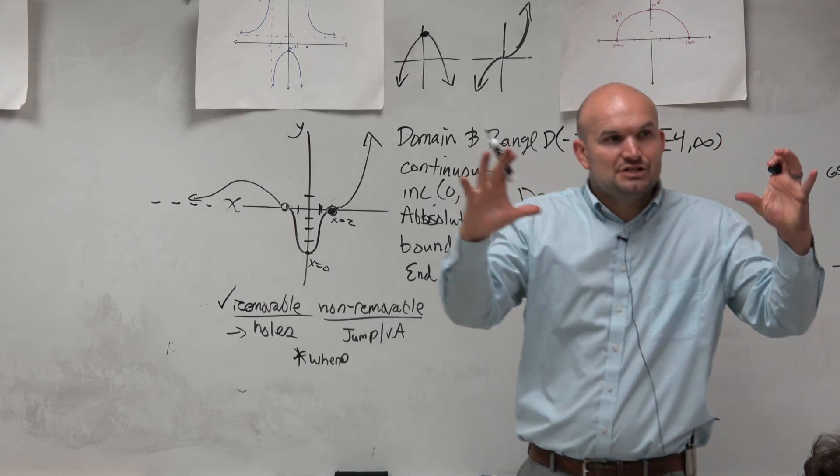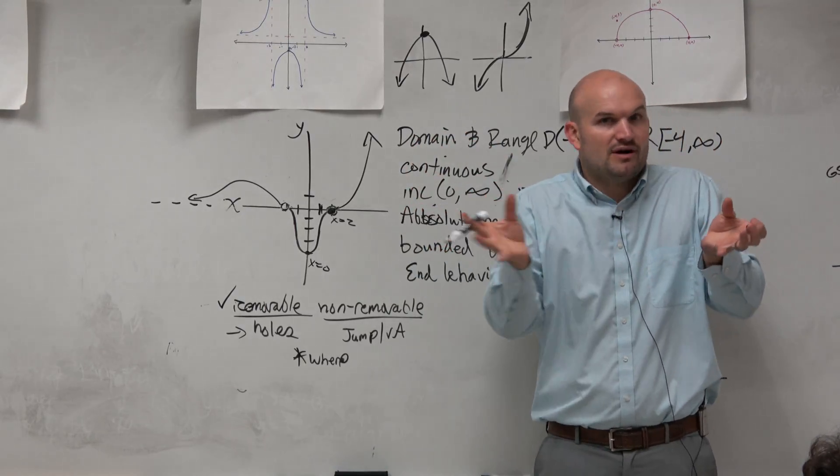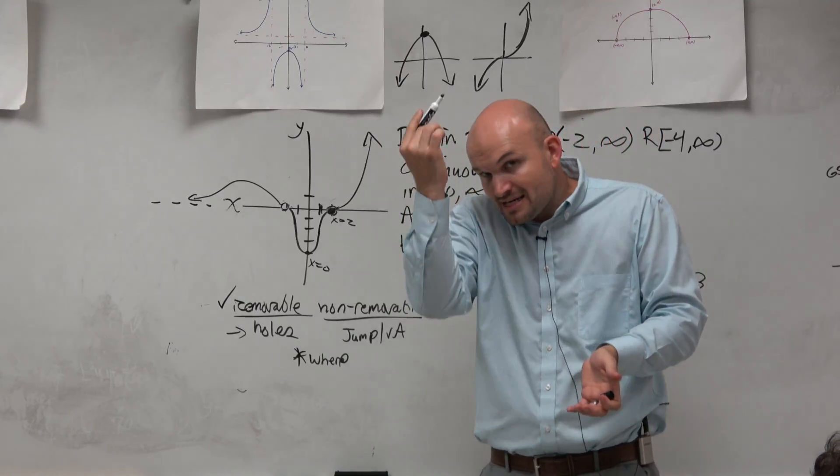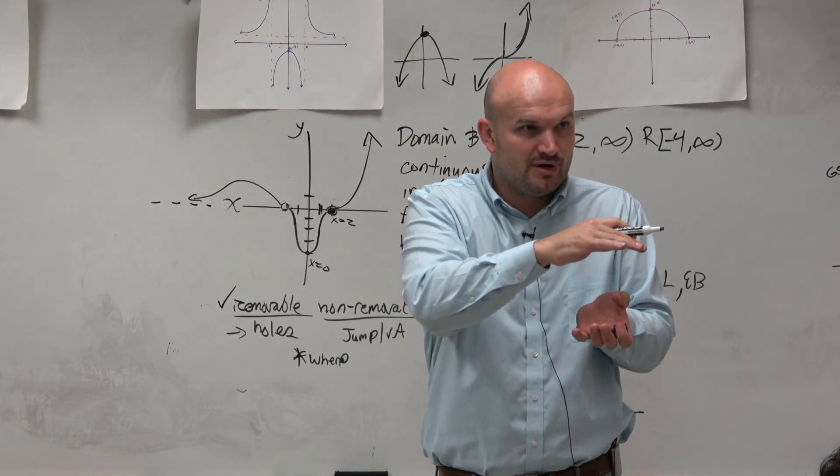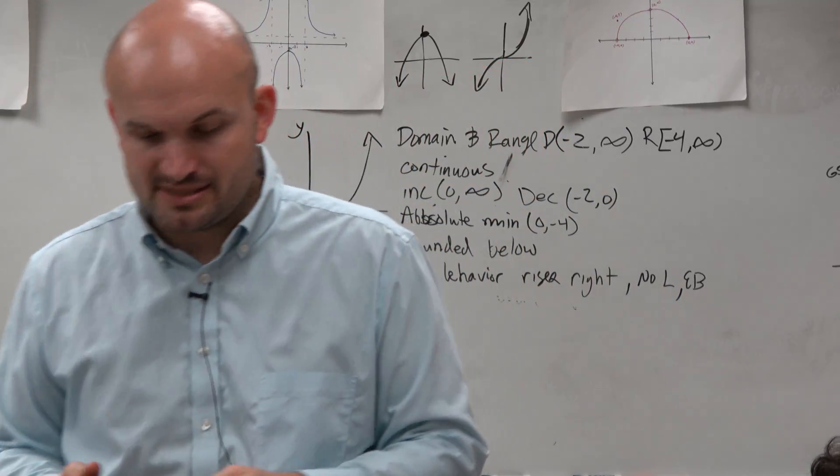So the end behavior is like as you zoom out, as you look to left and right, what is the graph doing? Where is it going? Either positive infinity, negative infinity, a number, or it's not doing anything. Or it's stopped, basically.